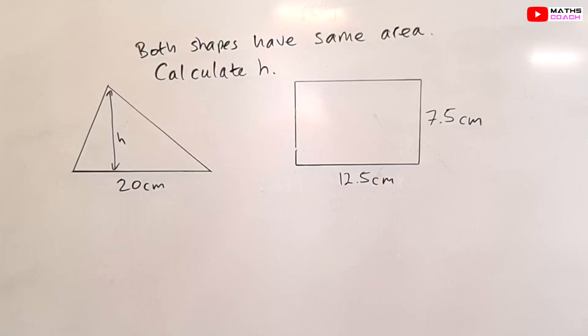So on to our final question which is probably looking at particularly the higher set students. Of course the middle set students are more than welcome to try this. So what do we have on the board over here? We have a triangle and a rectangle and we are told that both of these shapes have the same area. Calculate h.